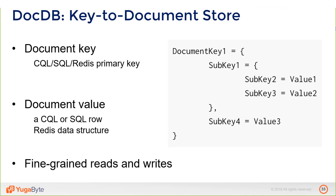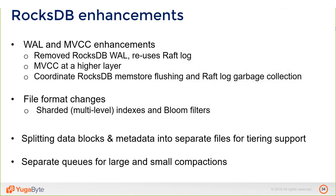DocDB allows fine-grained control. At a high level, a document models a row in CQL or SQL, and a data structure in Redis. The document key in Cassandra or SQL forms the primary key columns of the table; in Redis it's the key you use to read data. It allows fine-grained upserts, updates, reads, and writes on top of these documents.